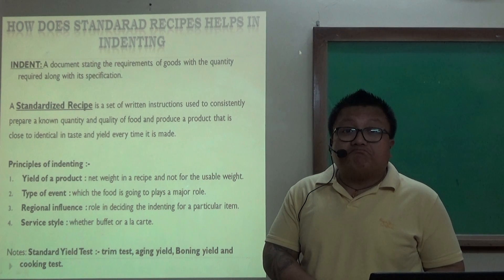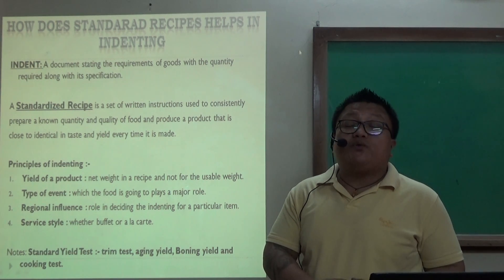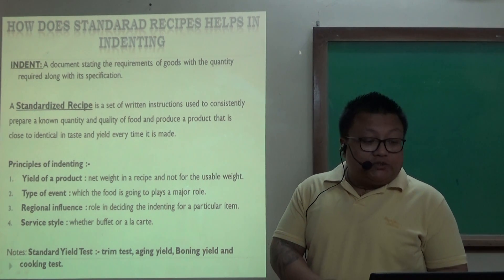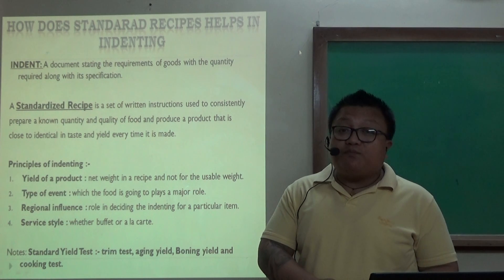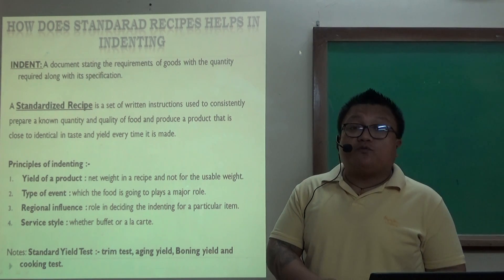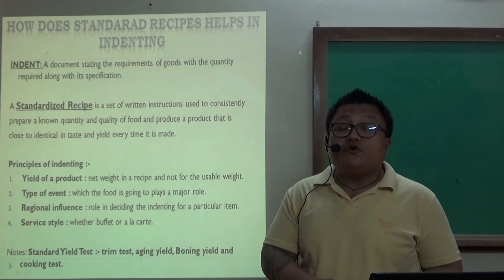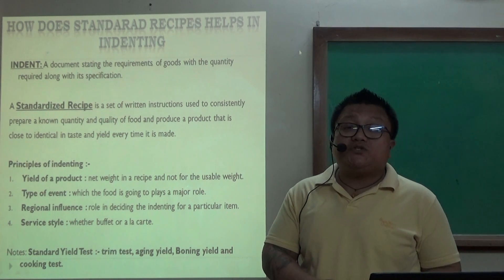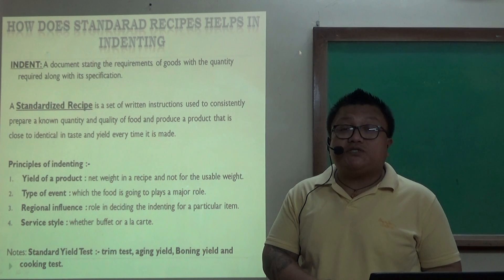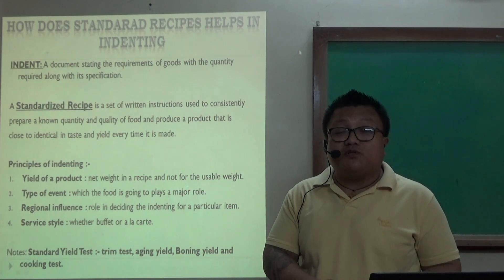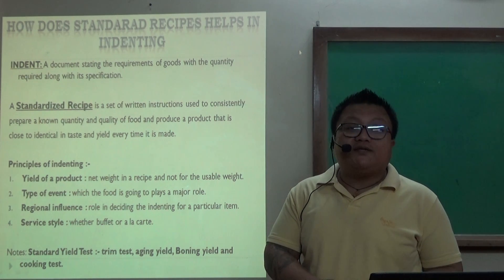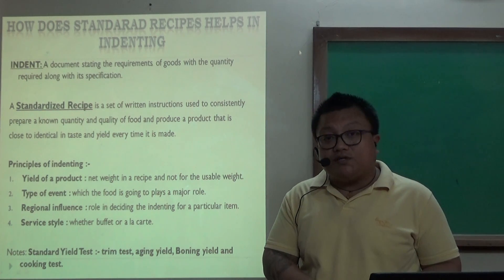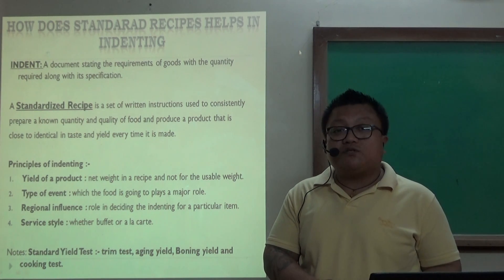The second point is the type of event — the event where the food is going to play a major role. What is the type of event? Is it a birthday party, a conference, a high tea, or a wedding reception? The type of event determines what kind of food we will be preparing.